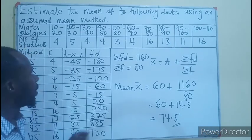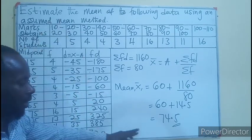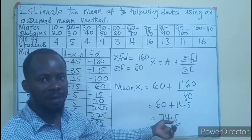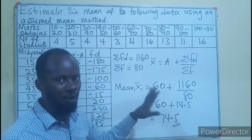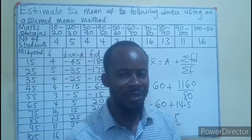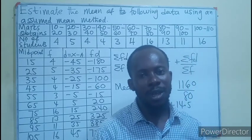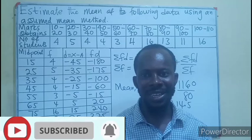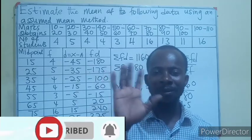It means the mean of this data using the assumed mean method, we arrive at 74.5. We can also try using sigma fx over sigma f and see if you arrive at the same answer. Thank you so much for watching, like and comment.